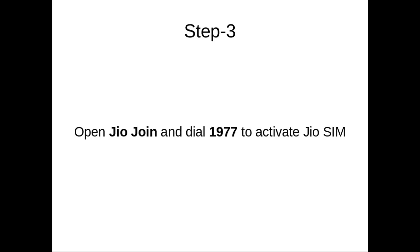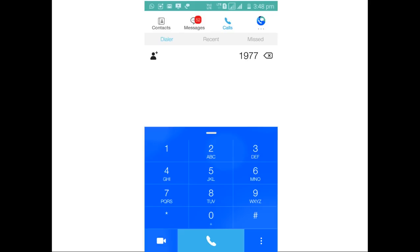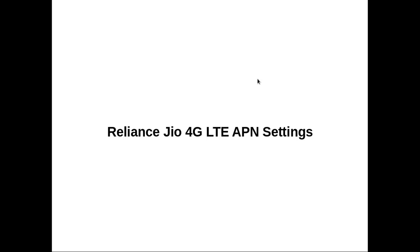That is very important — you have to use the Jio Join App to make voice calls. Dial 1977 to complete the tele-verification. This is only for reference.